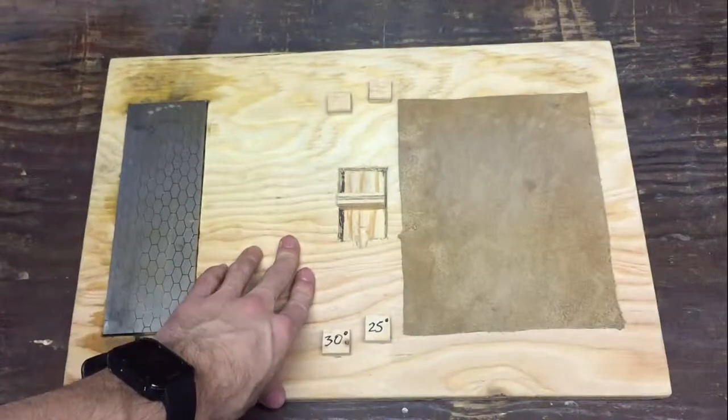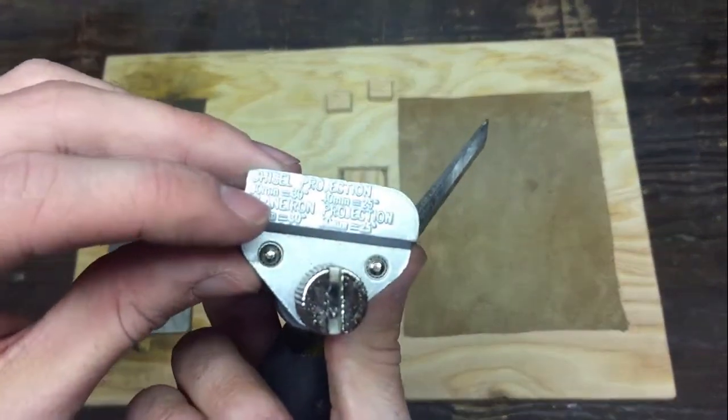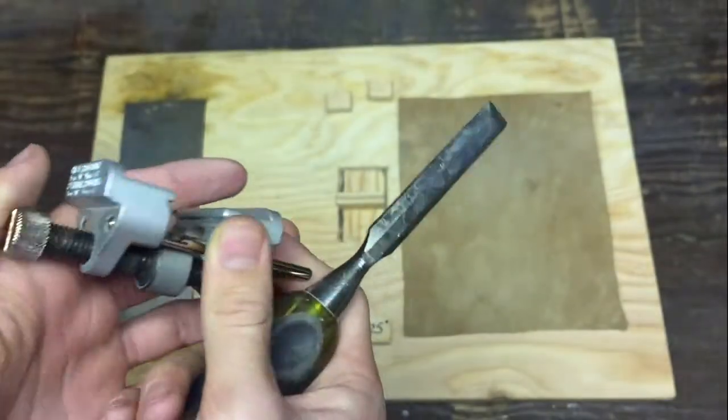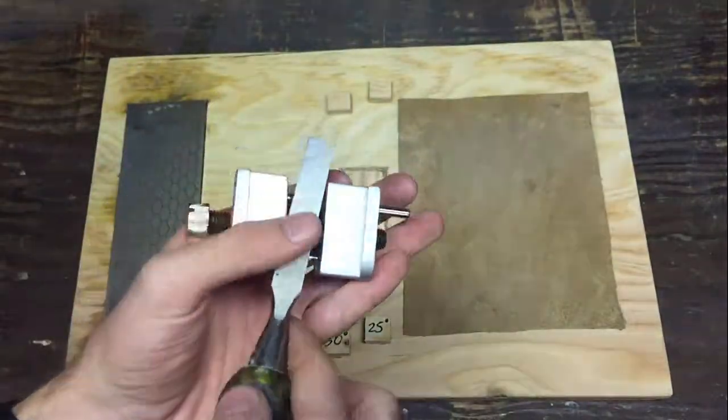So for a 25 degree, I have to be a certain distance from the honing guide to the tip of my chisel. So here I'm going to show you how to install it.